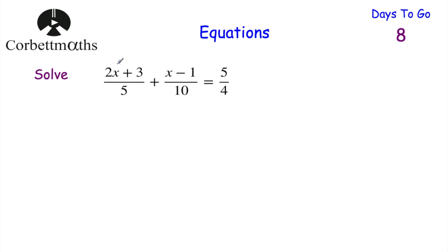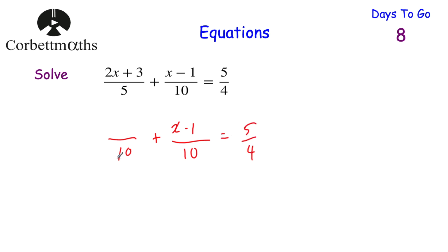Let's have a look at our second equation: (2x+3)/5 + (x−1)/10 = 5/4. Feel free to press pause and try this. To simplify the left-hand side, we want a common denominator of 10. The second fraction stays as (x−1) over 10. To get from 5 to 10 we multiply by 2, so the numerator becomes 4x + 6. Now both fractions have denominator 10, so we can add: 4x + x = 5x, and 6 + (−1) = 5, giving us (5x + 5)/10 = 5/4.